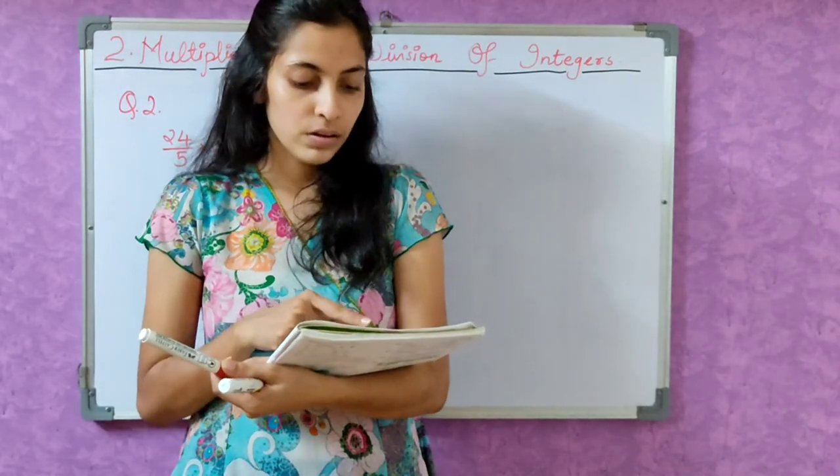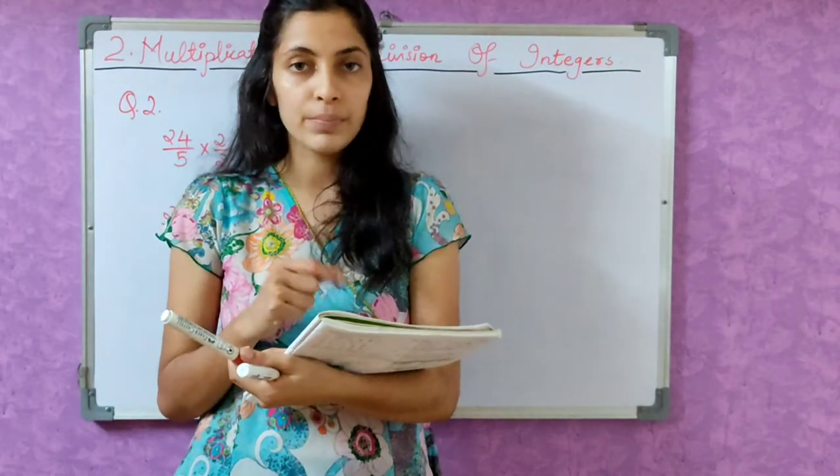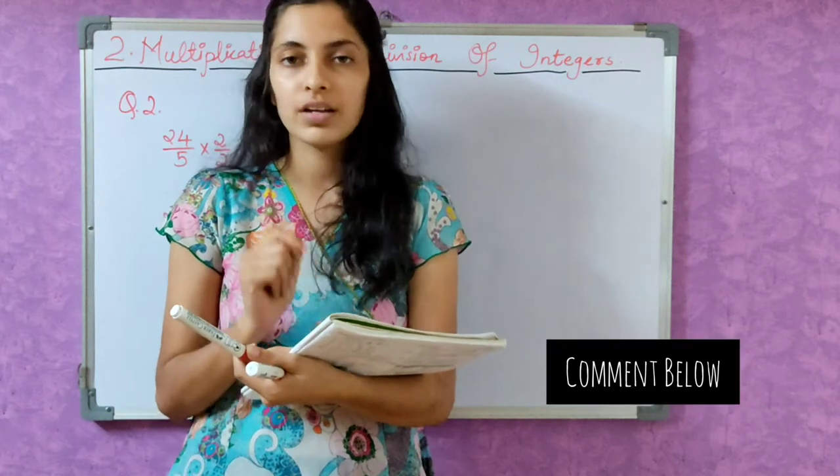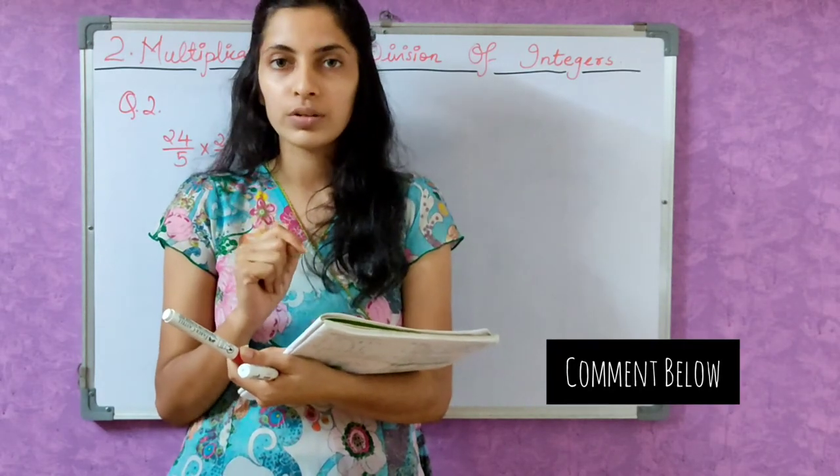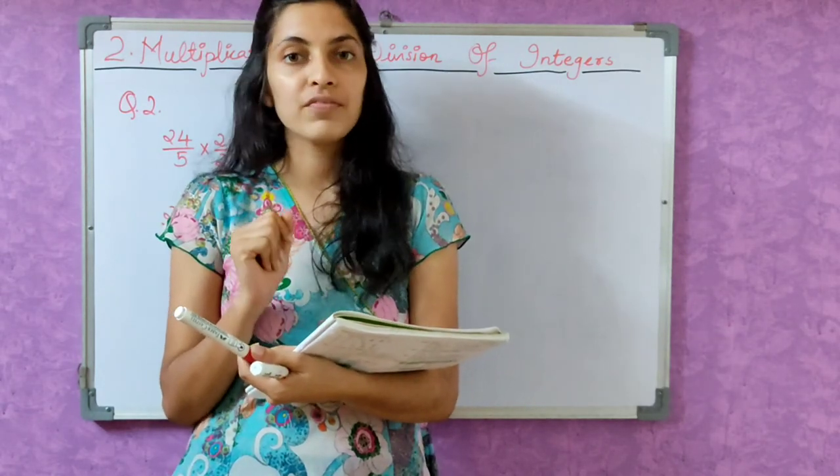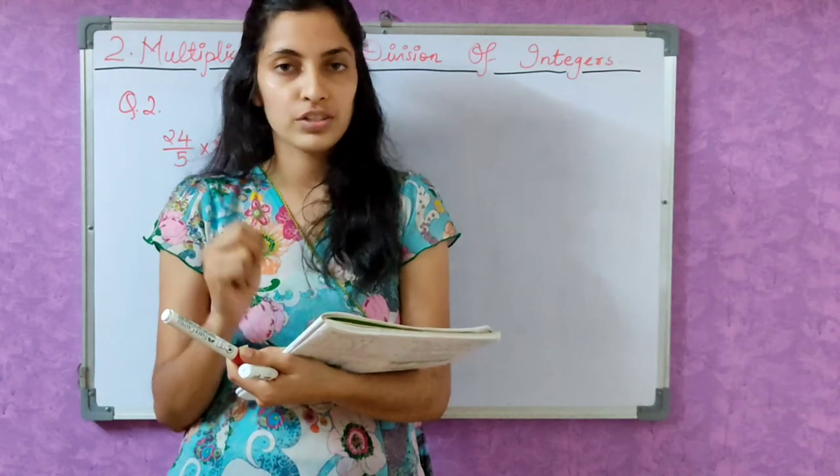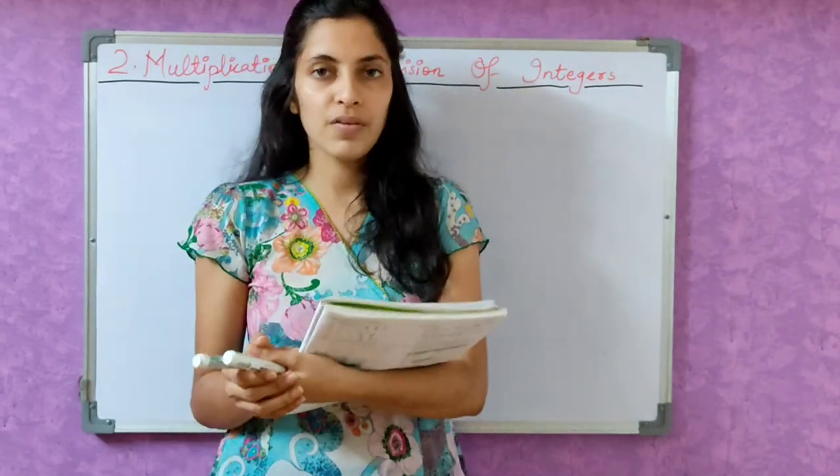Now let's see the third one. The third one is also the same. Minus 5 by 7. You tell me the solution for this. I'll tell you one: minus 10 by 14, correct? You try the remaining 2 fractions and tell me.